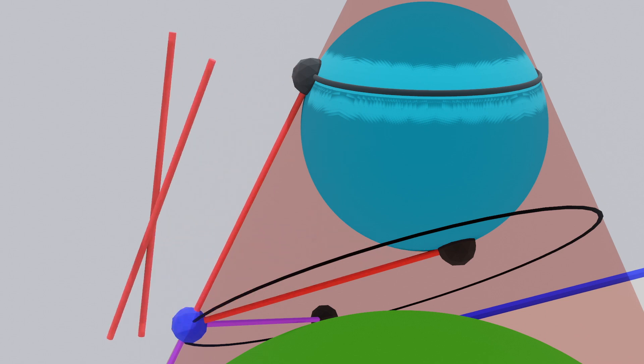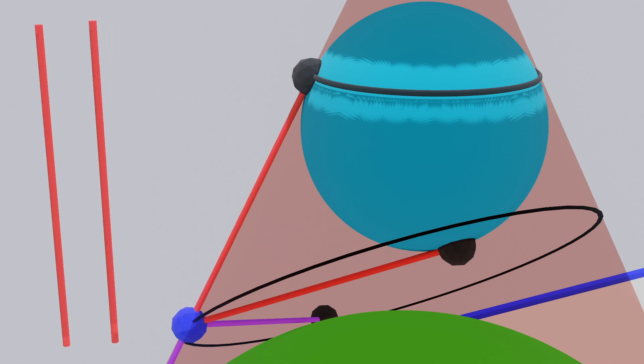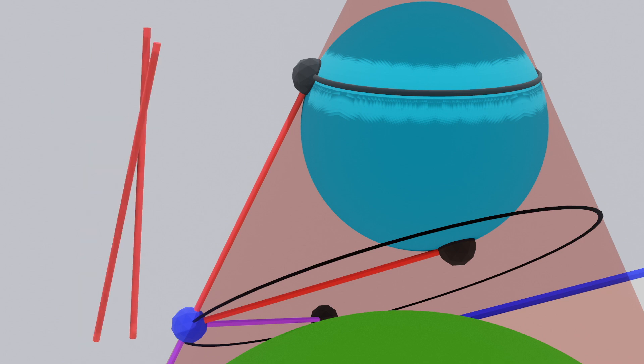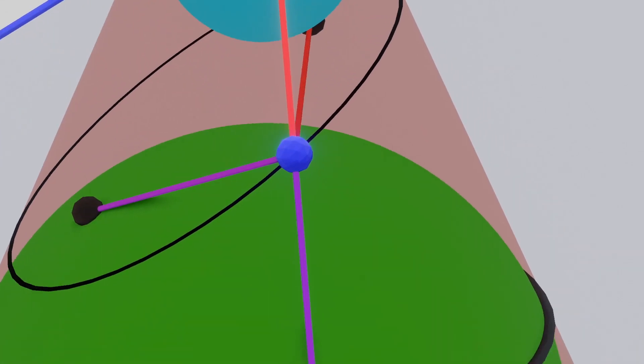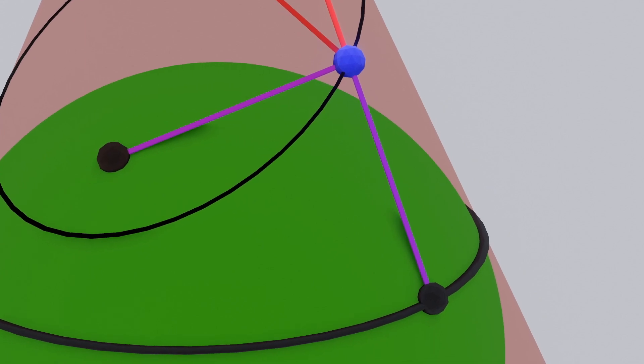From earlier, we know that both of these lines must be of exactly the same length. We can now apply the exact same argument to the purple lines on the lower Dandelin sphere and also argue that these are both of exactly the same length.